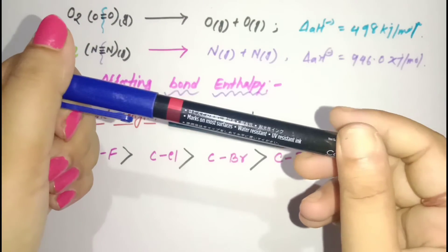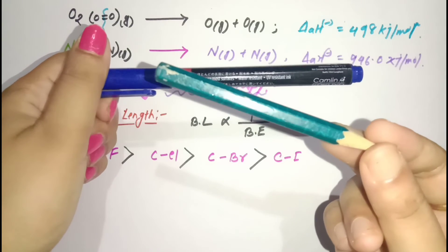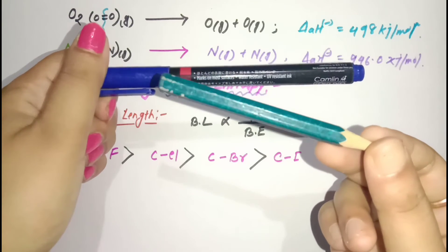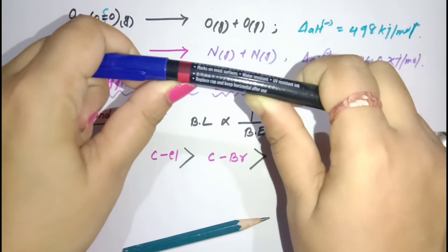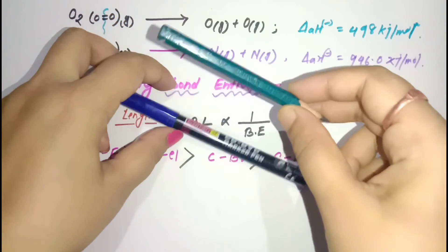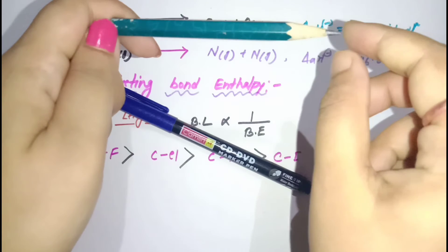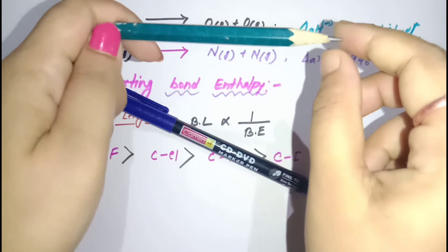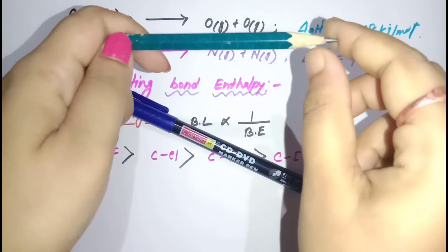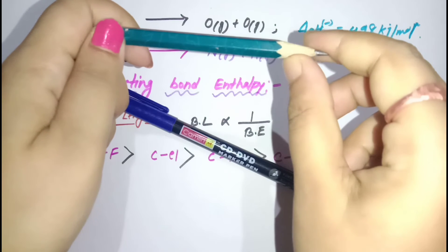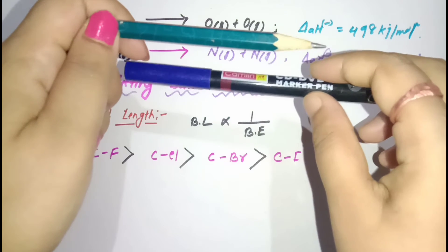Consider this marker and this pencil. If we consider these two atoms and try to stretch this bond, the pencil will break with less energy. Because of the distance between atoms, the attractive force is less. So if the bond length is longer, the bond enthalpy will be less.